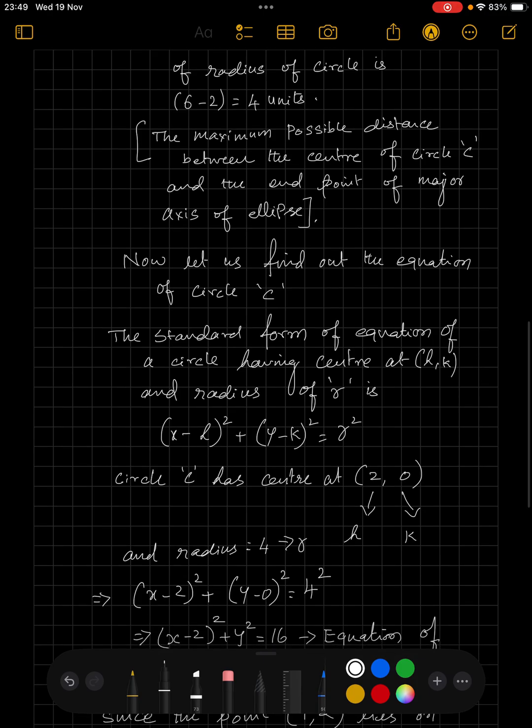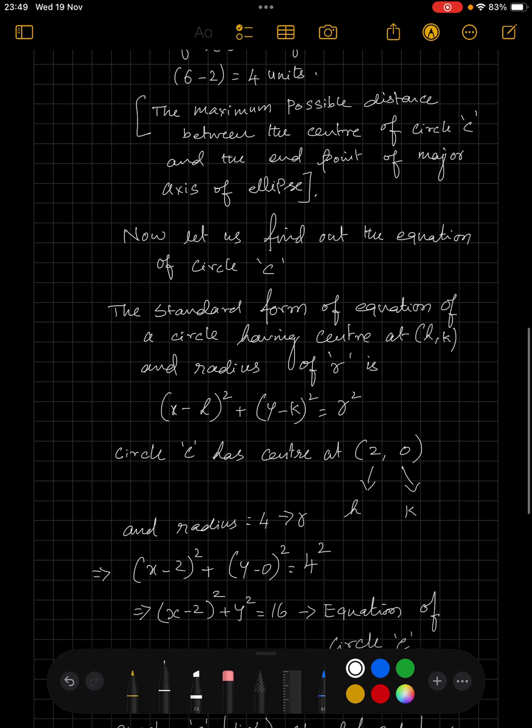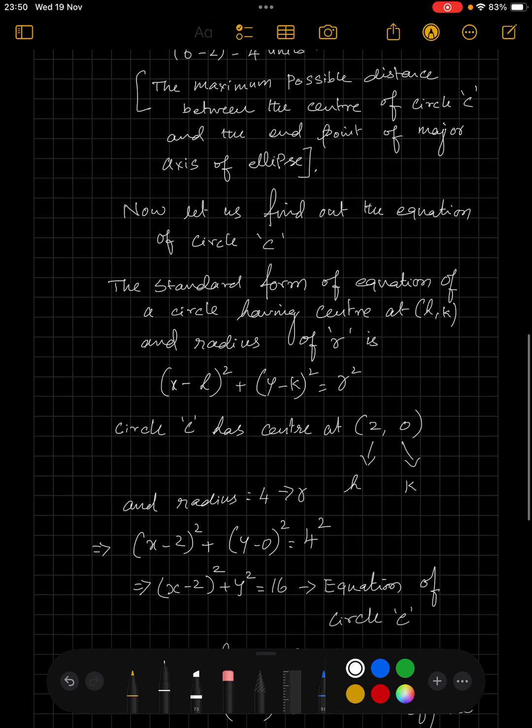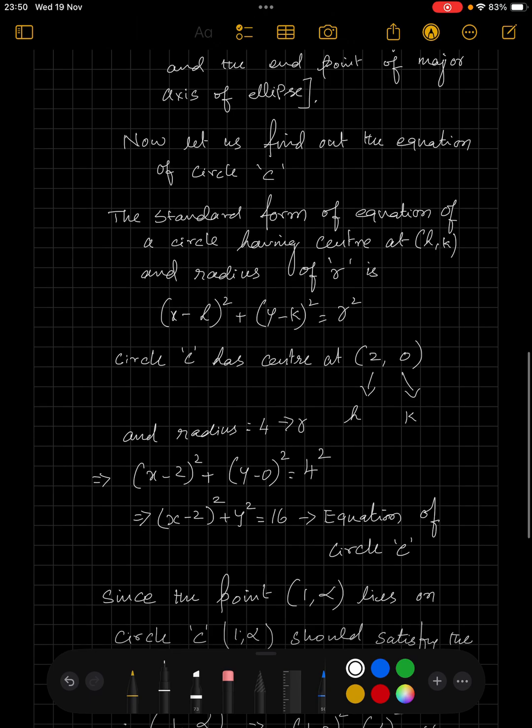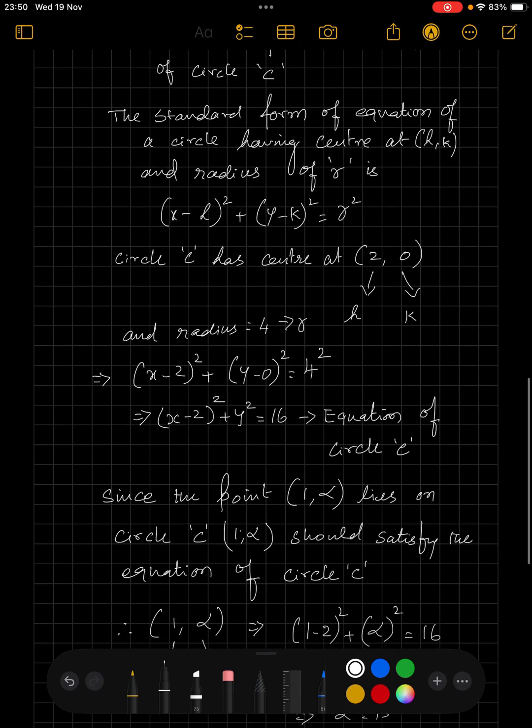Circle C has center at 2 comma 0, so 2 comma 0 can be substituted for h and k and radius 4 can be substituted for r, and we get x minus 2 whole square plus y square is equal to 16 as equation of circle C.